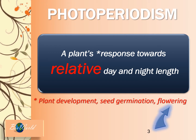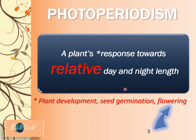Seed germination is promoted by the hormone gibberellin but inhibited by abscisic acid, and flowering is stimulated by the hormone ethylene. But scientists have also identified that plants respond according to the amount of exposure to daylight and darkness. That's why we use the word 'relative day and night length,' because each plant has a different amount of daylight and darkness that they have to be exposed to — there is no fixed value. So even if a plant has lots of flower buds and is already synthesizing high concentrations of ethylene, if that plant is exposed to too much sunlight it may not flower.